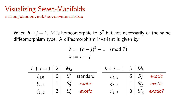When H plus J equals one, M is homeomorphic to the seven-sphere, but not necessarily of the same diffeomorphism type. A diffeomorphism invariant is given by the number lambda, defined to be H minus J, squared minus one, modulo seven. Standard and exotic structures on S7 are shown in the tables here, where K denotes the difference H minus J.